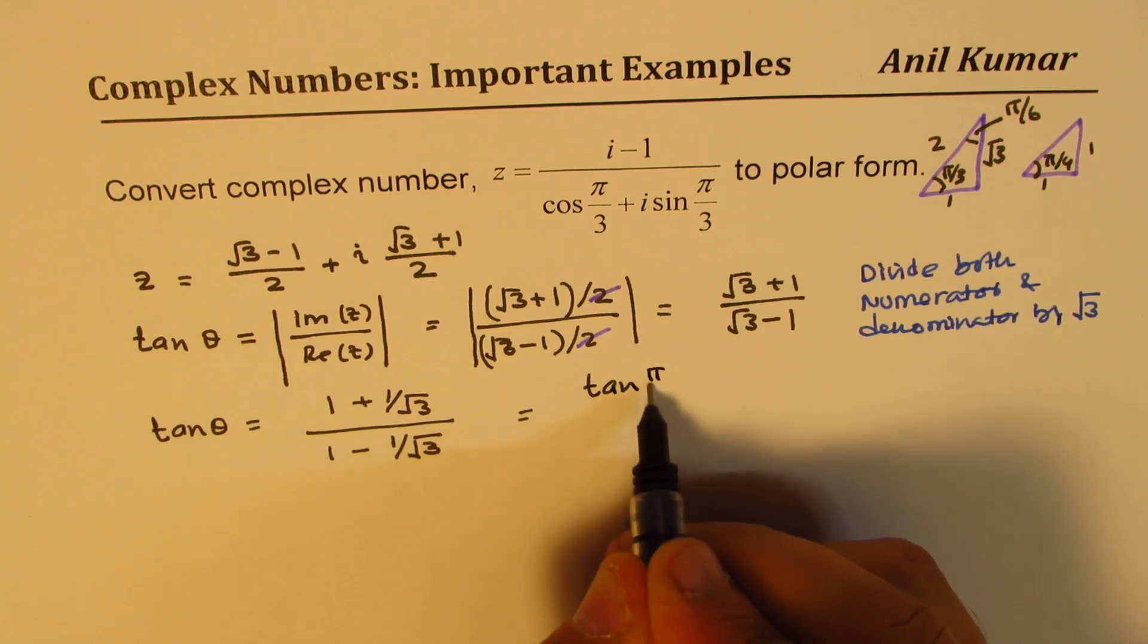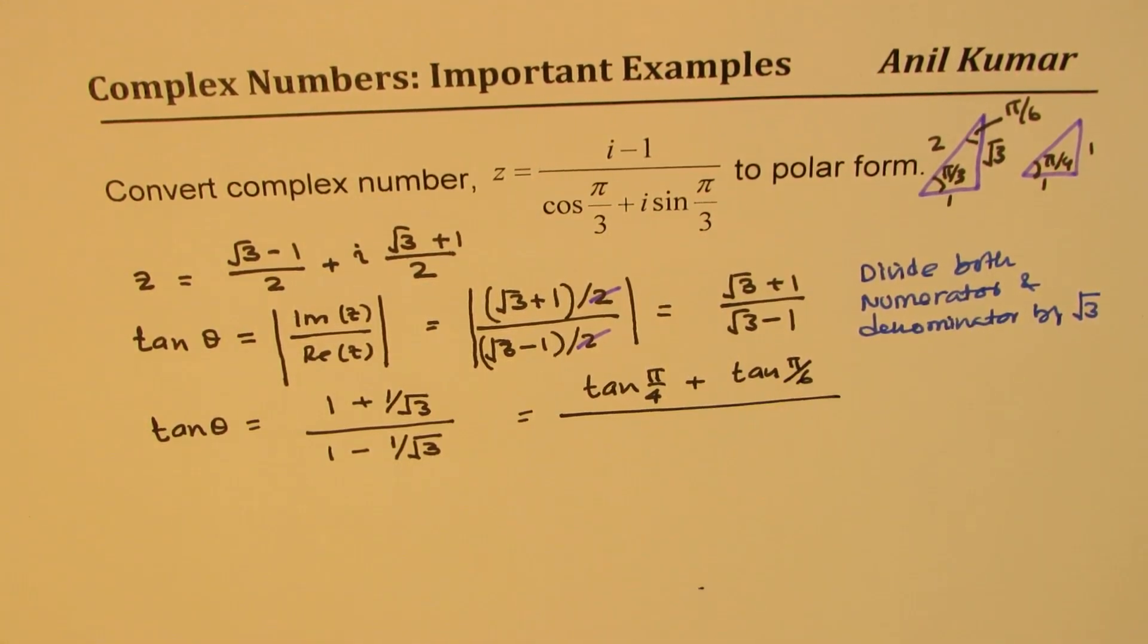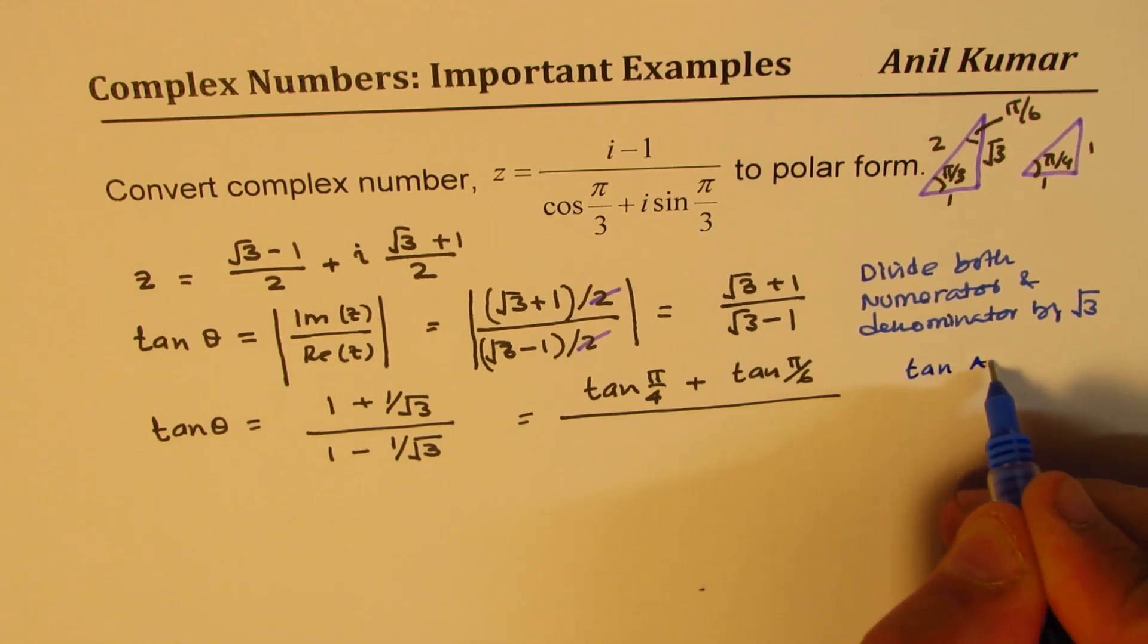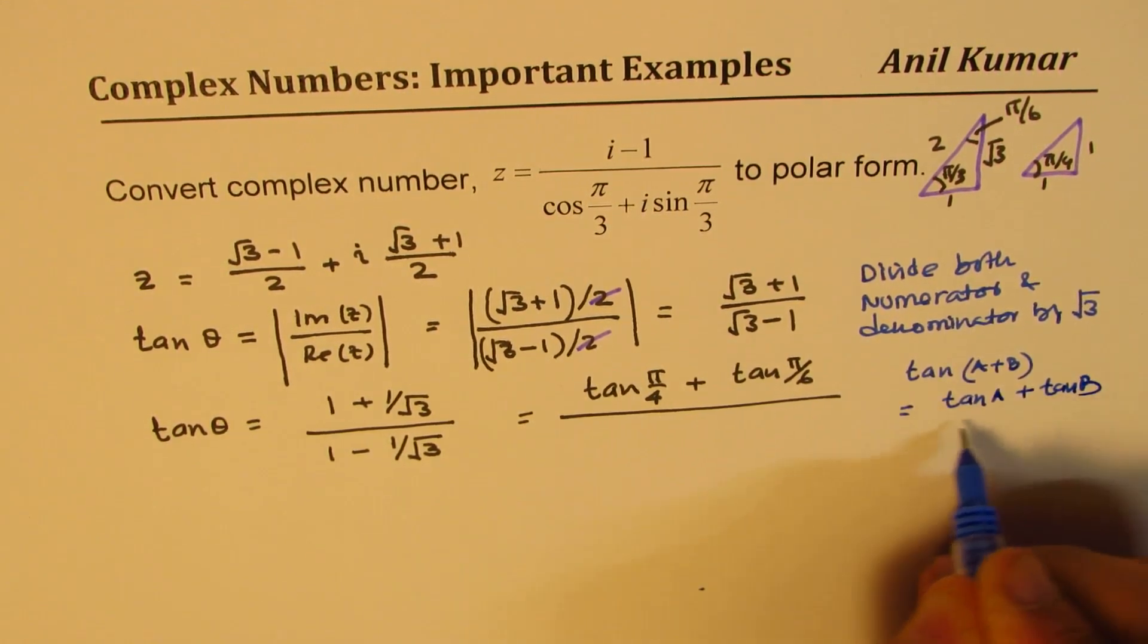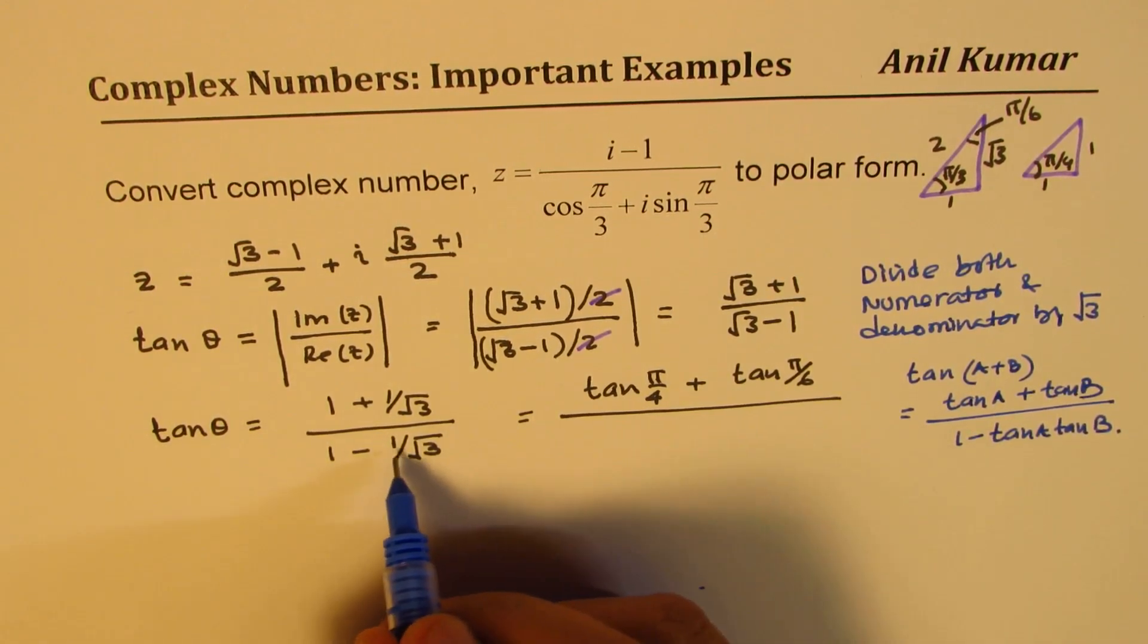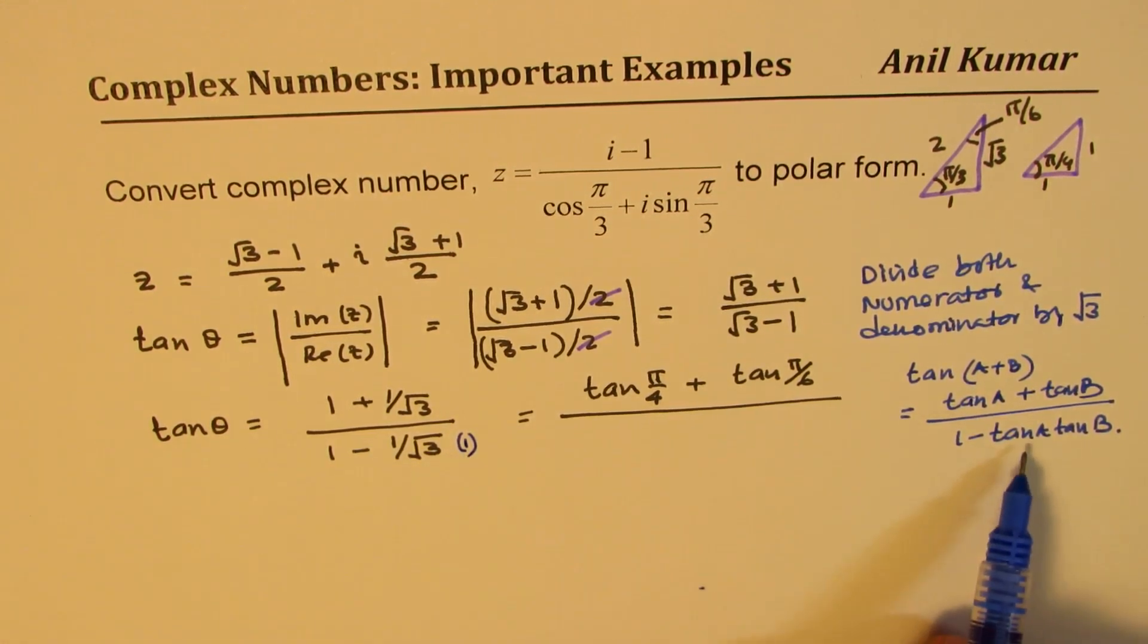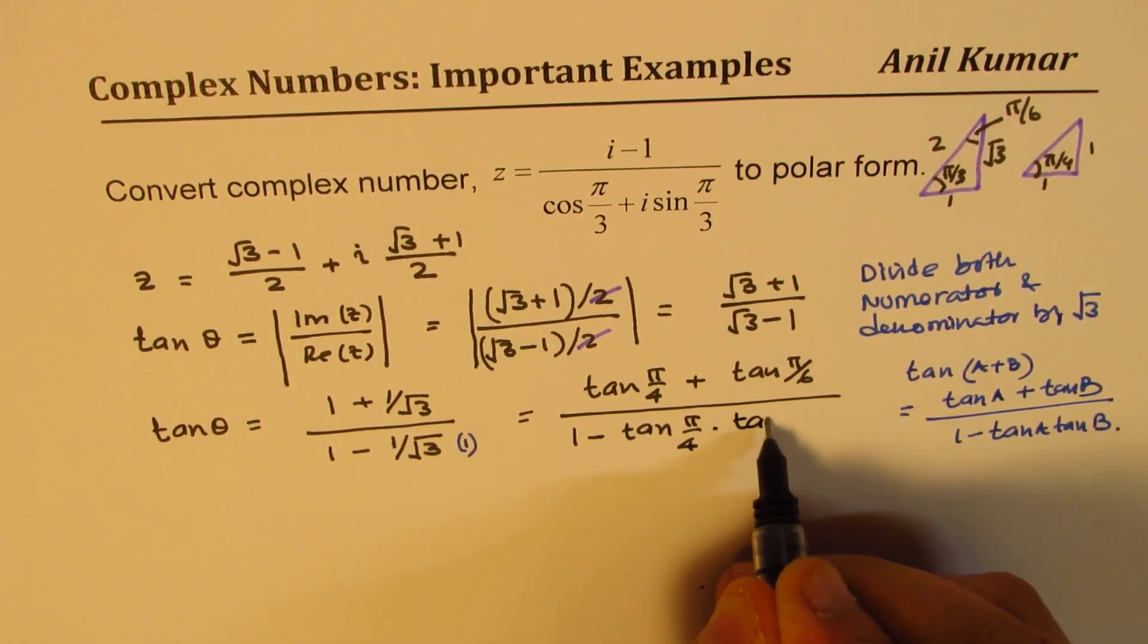So I could replace the numerator with tan π/4 plus tan π/6. Now if you recall, we have tan(a + b) formula. What is tan(a + b) equals to? tan(a + b) is (tan a + tan b)/(1 - tan a tan b). So I've got that numerator part correct. Now in the denominator, I have to get something like this. I have 1 minus. So we could think about multiplying by 1, which is tan π/4. So we could write the denominator as 1 minus tan π/4 times tan π/6.